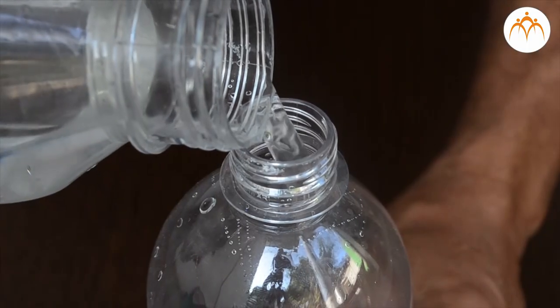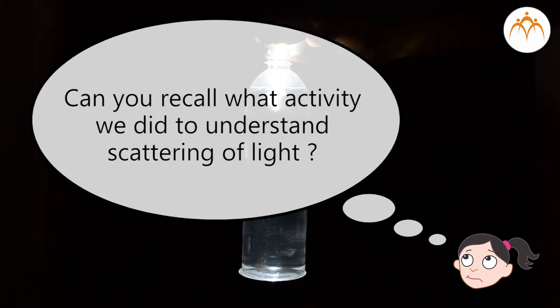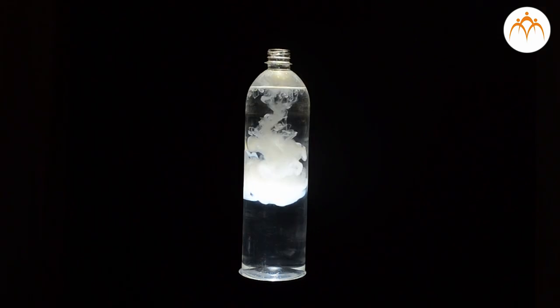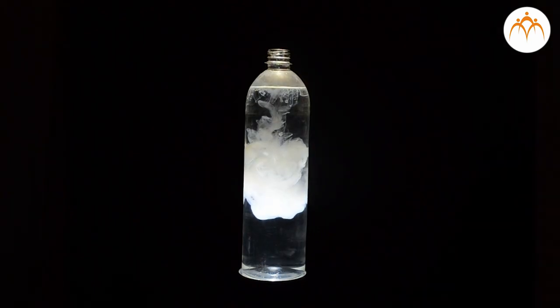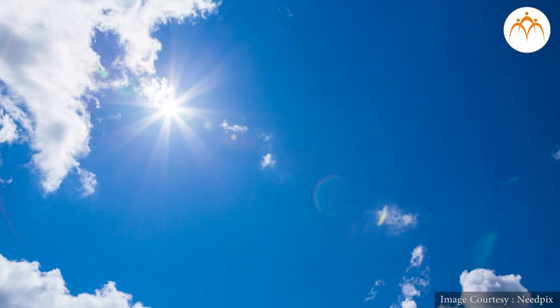In 7th standard, you learnt about scattering of light. Can you recall what activity we did to understand scattering of light? We passed white light through milky water. At the edges, there was bluish tinge. That helped us to know why the sky looks blue.